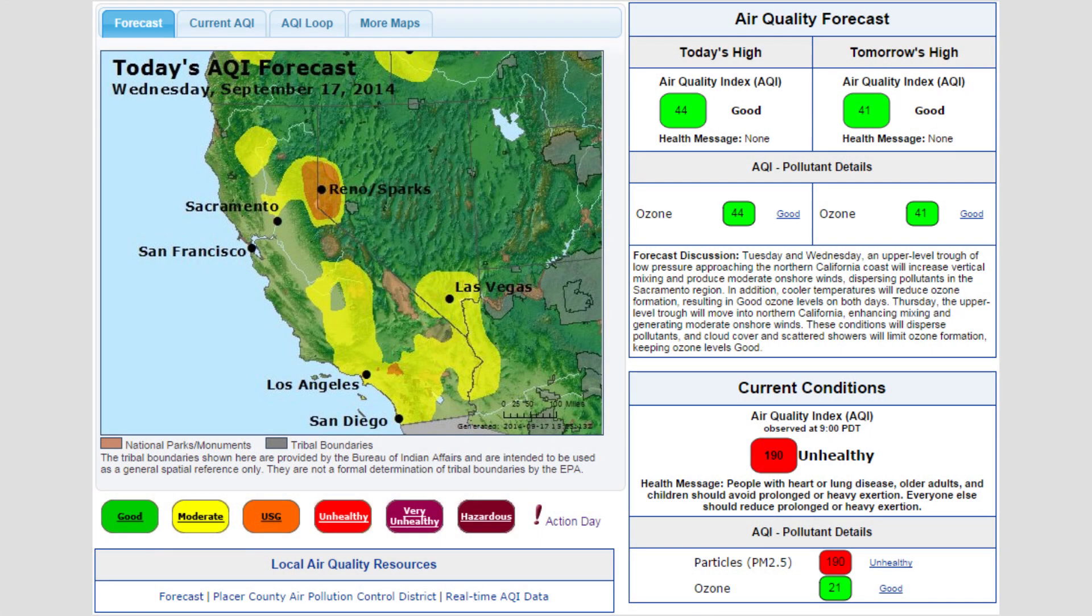A section halfway down the page on the right indicates the current conditions. The scale has a color coded system for stratifying the level of danger from current conditions, with green being good or safe and maroon being hazardous.